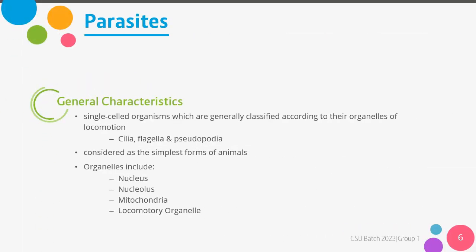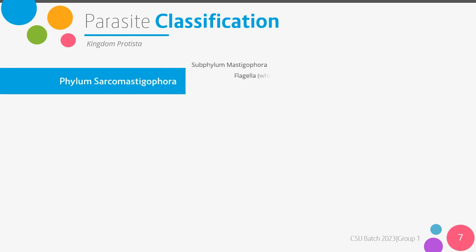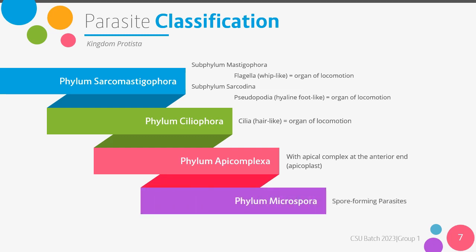Parasites are single-celled organisms and are considered the simplest forms of animals. They are generally classified according to their organelles of locomotion, which are the cilia, flagella, and pseudopodia. Other organelles they contain besides the locomotory organelle include the nucleus, the nucleolus, and the mitochondria. Parasites are classified under the kingdom Protista. Under this, there are several phyla, including phylum sarcomastigophora, phylum ciliophora, phylum apicomplexa, and phylum microspora.